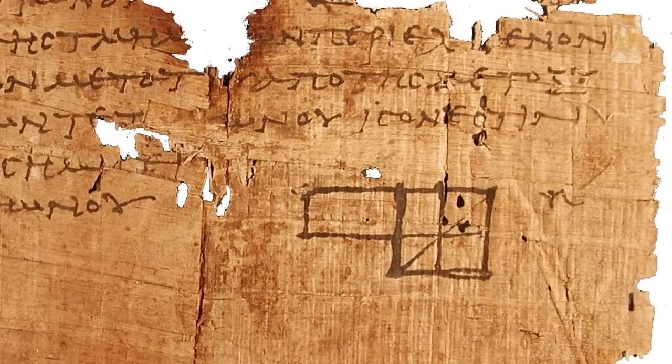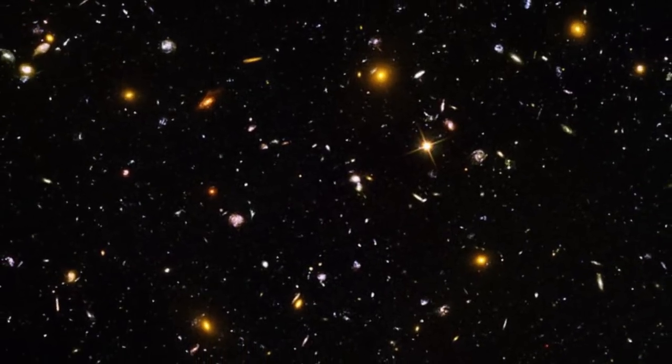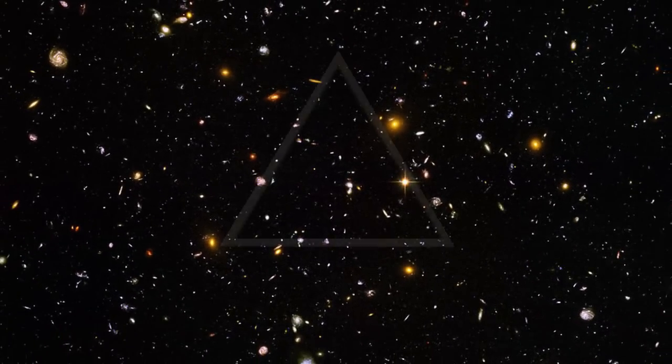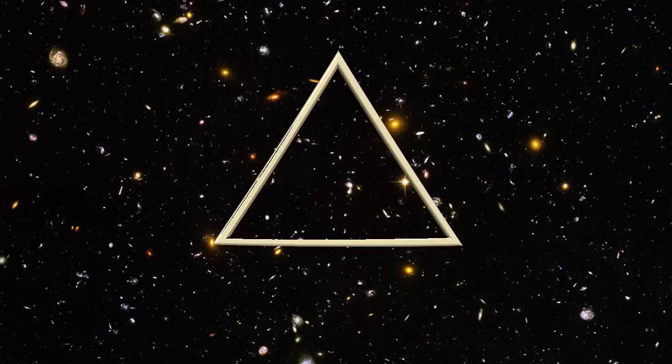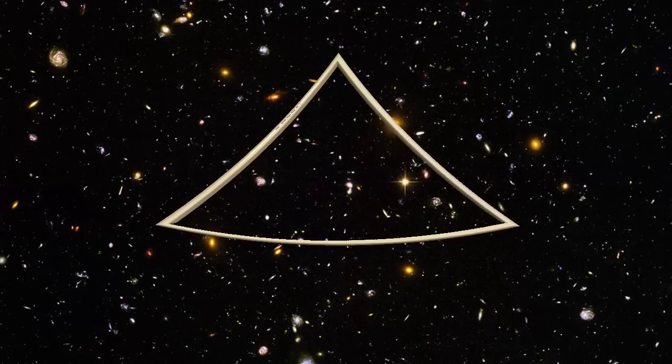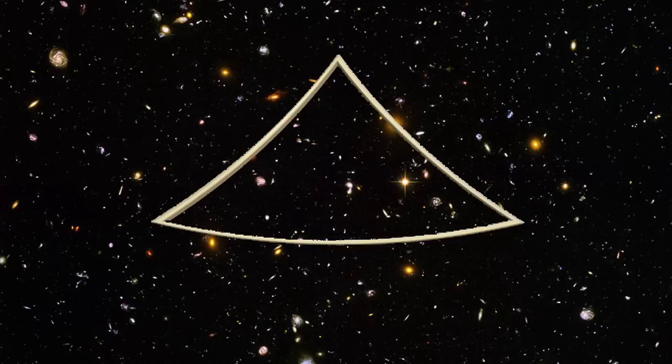And a flaw has been revealed in Euclid's math. His geometry struggles to describe the universe. Triangles change when mapped onto a non-Euclidean curved space. No longer is the sum of the internal angles 180 degrees.